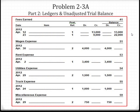Fees earned is our revenue account and has a normal credit balance. So when we journalized fees earned, we record the journal entry for that particular line and keep a running balance. For April, we earned $22,000 in fees earned, which is basically revenue. Expense accounts have a normal debit balance. Every time we record an expense in the journal, we apply it to the ledger and keep a running balance, so we know exactly how much we spent on each expense after every transaction.